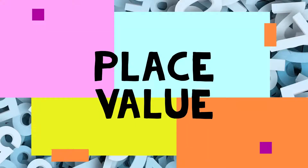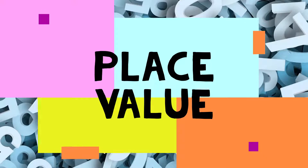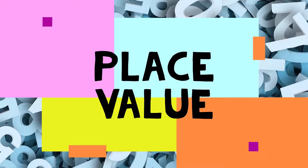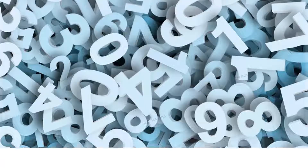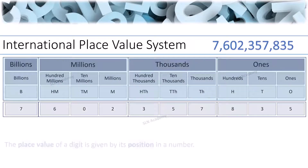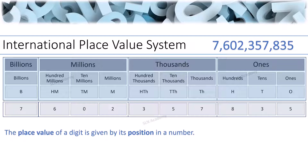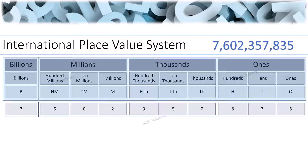Place Value. How do we find the place value of any given digit in the International Place Value System? The place value of a digit is given by its position in the number. We need to find the place value of 6 in this number. 6 is placed in the Hundred Millions position, so the place value of 6 is 600 million.